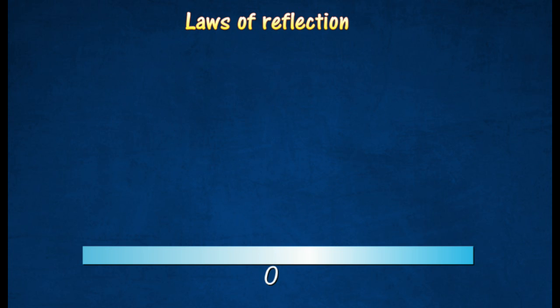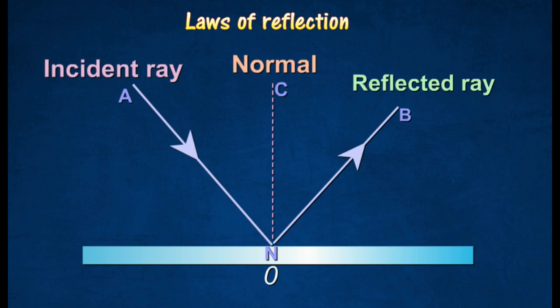According to the law of reflection, the incident ray AN, the reflected ray NB, and the normal CN all lie on the same plane.